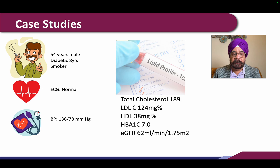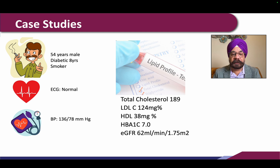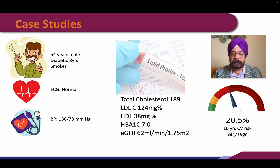Now another case study: a 54-year-old male who is a smoker, blood pressure is nearly normal, LDL is 124. We always look at the LDL first. He is also diabetic. Diabetes puts a patient in a high risk category, and if the person has another risk factor — like smoking — it shifts to a very high risk category. His CVD risk is slightly more than 20%, placing him between high and very high risk.